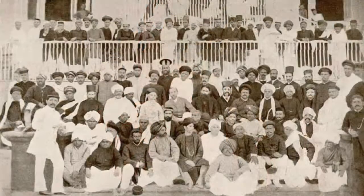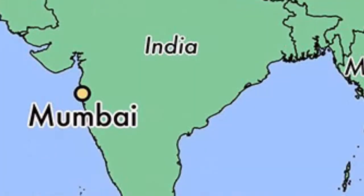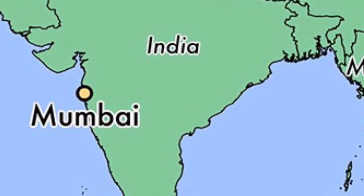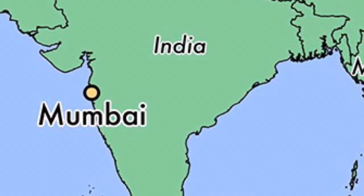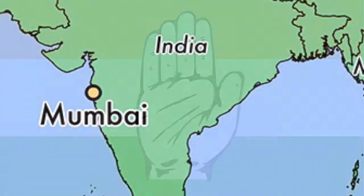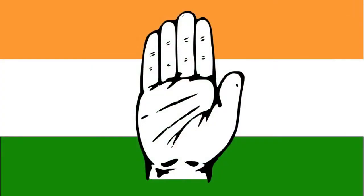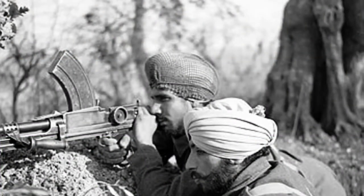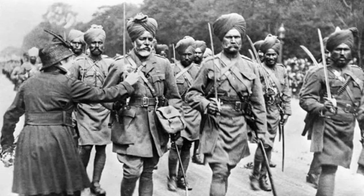In 1885, the focus for Indian nationalism shifted when 70 delegates met in Mumbai, each representing their British province. They formed a political party called the Indian National Congress. The Indians were promised freedom from the British if they fought in the world wars, but never achieved it, even though they fought well and sacrificed over 3 million of their people.